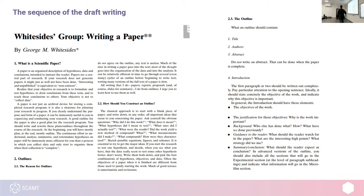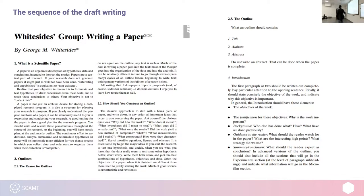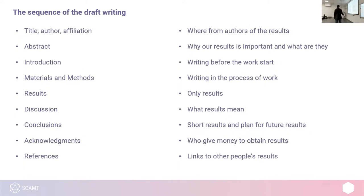I think first-year students have already received some kind of project or outline. You should prepare your first article somewhere in April and publish it maybe one year later. So how should you proceed? In my opinion — and it's just my opinion, the third one after Whitesides — so it's like Professor Richardson, Professor Whitesides, and me. The sequence of draft writing: what's the first thing you need to start with?